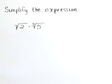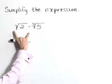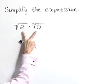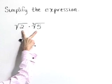Simplify the expression: square root of 2 times the cubed root of 5. Now notice that our indices are not the same. We have a square root, we have a cubed root. So we can't just multiply these radicand values.